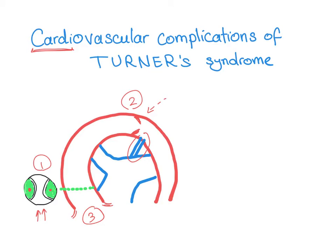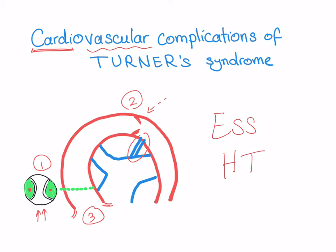The vascular complication of Turner syndrome is essential hypertension, or primary hypertension. In 50% of cases of Turner syndrome there is hypertension, which is why we have to treat it vigorously.